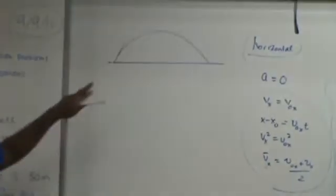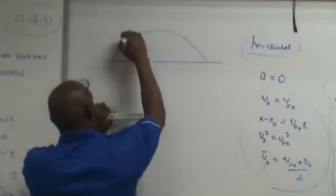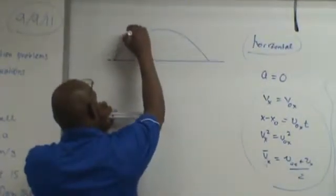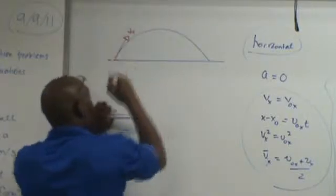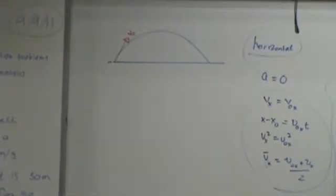So you kick the football with that velocity. That's the initial. That is not X or Y. That's just V0.